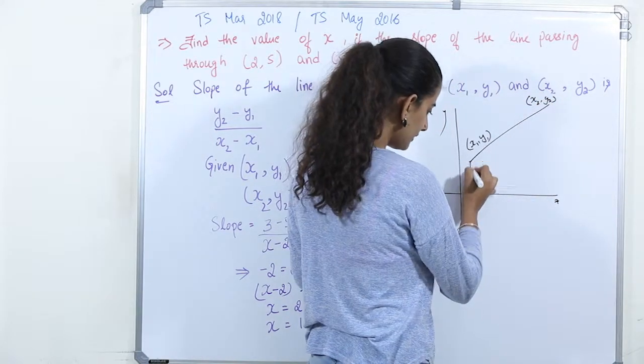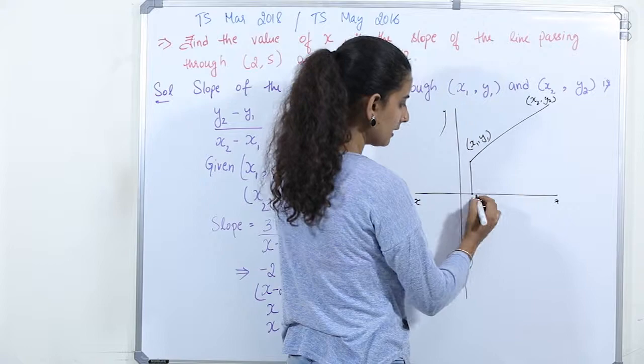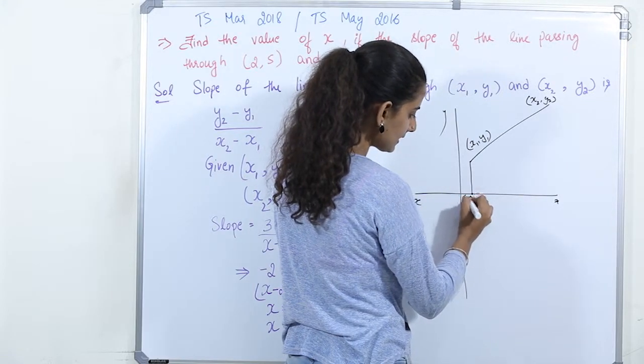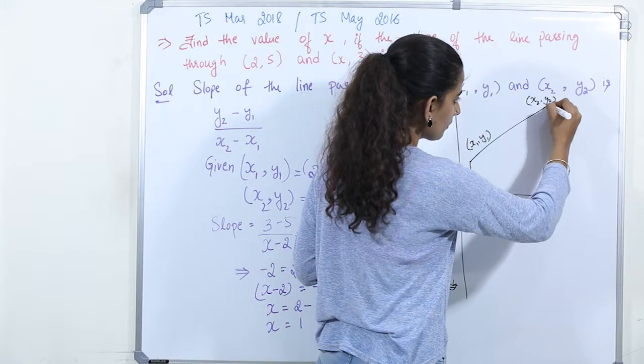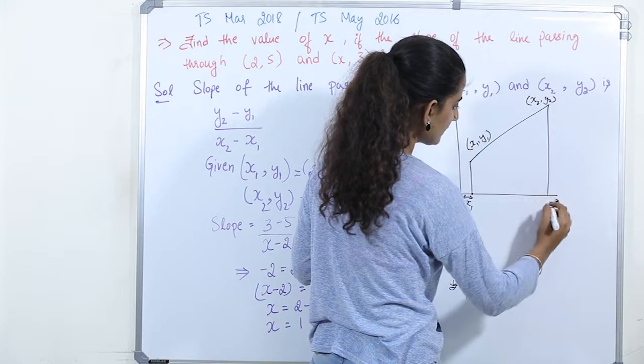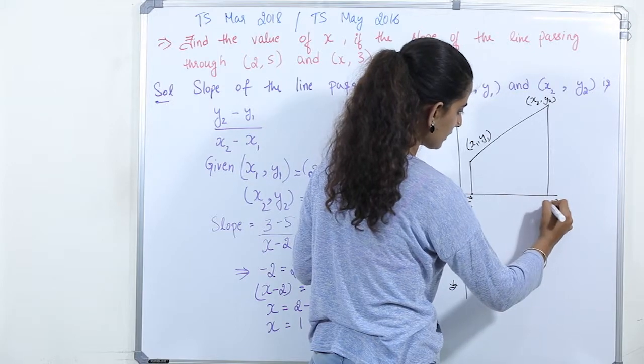Now this point here, this distance from origin to this point is x1 and this is x2.